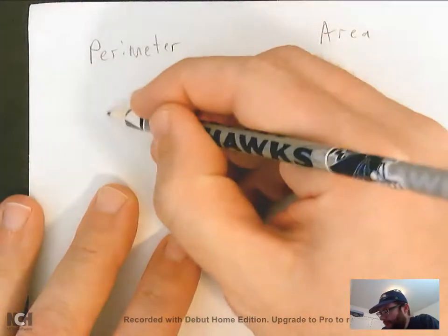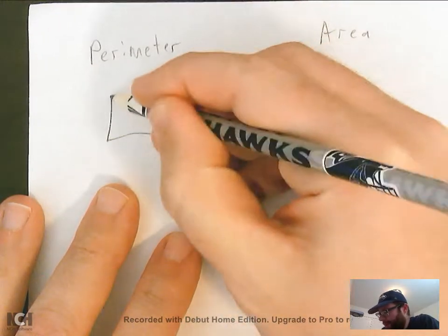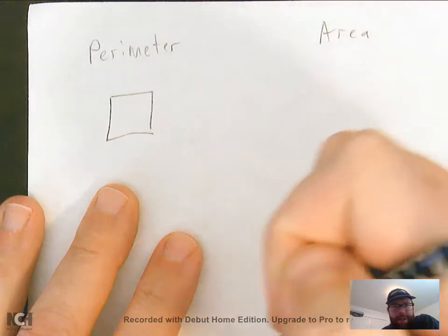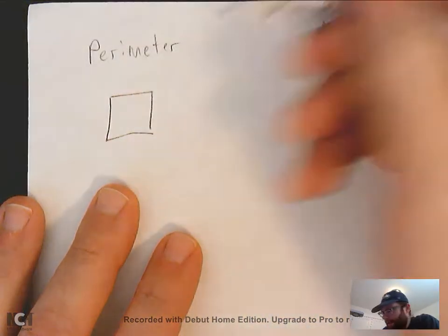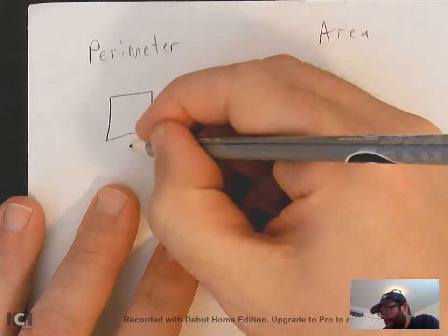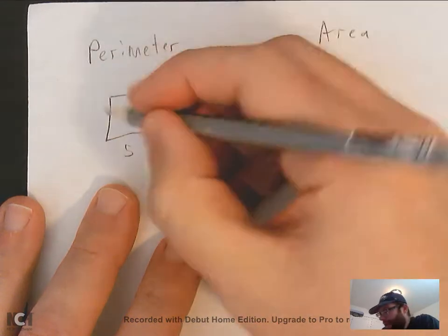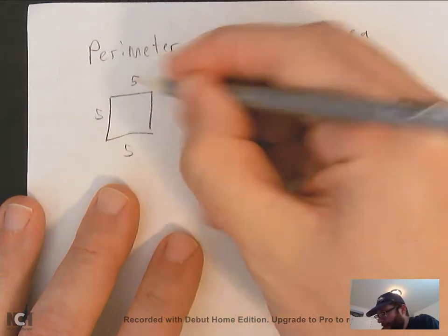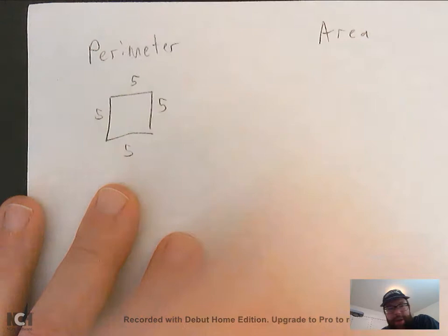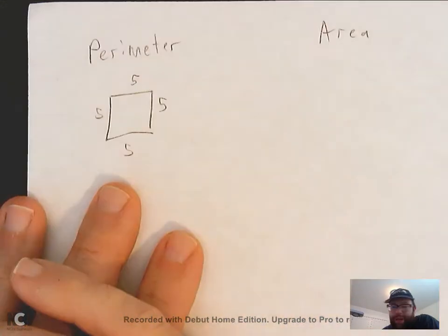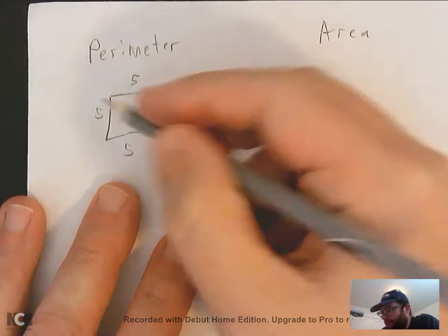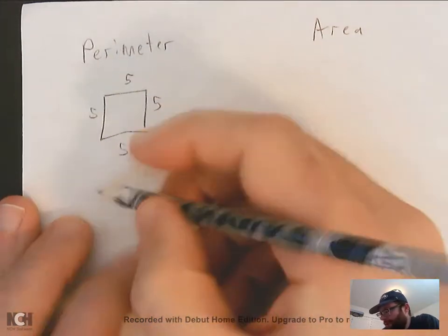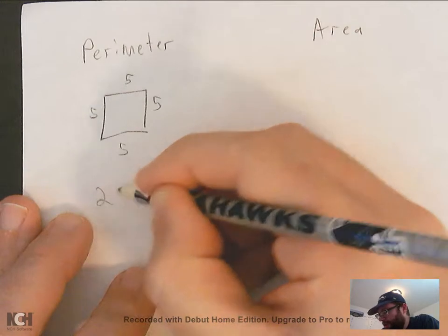So perimeter — let's say I have a square here. Perimeter is just the length of each side added together. So if this is a square and this side is five, that means all the sides are going to be five, whatever unit of measurement we're talking about. So the perimeter would just be five plus five plus five plus five, which is 20. So perimeter would be 20.